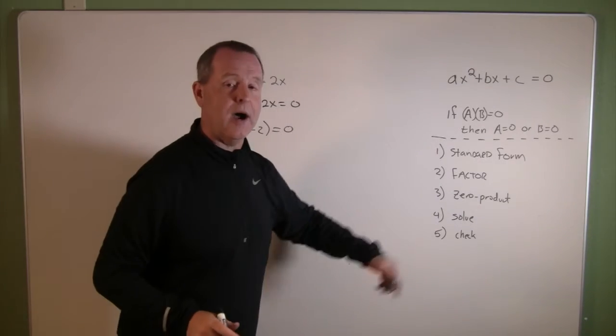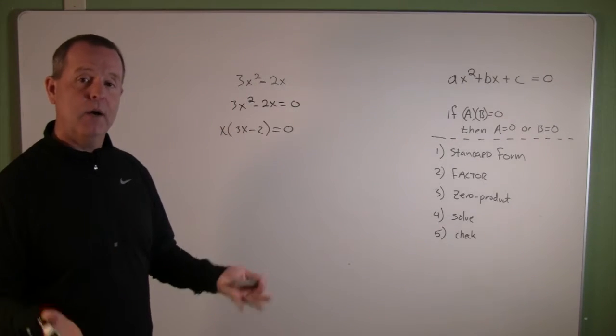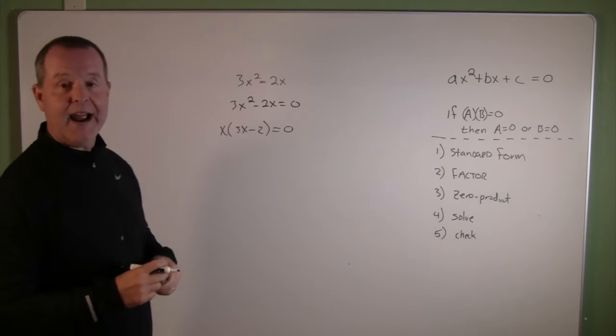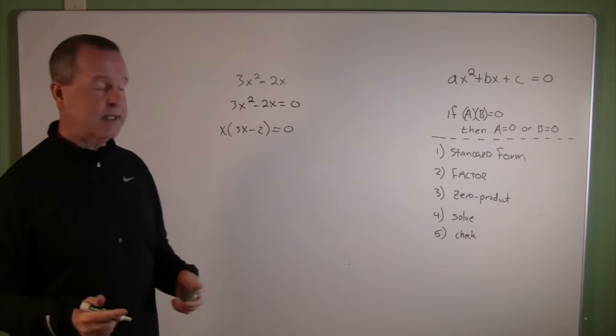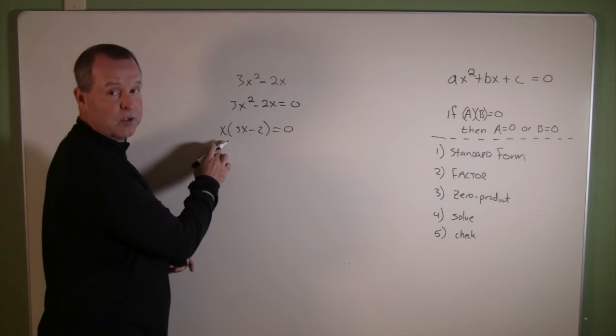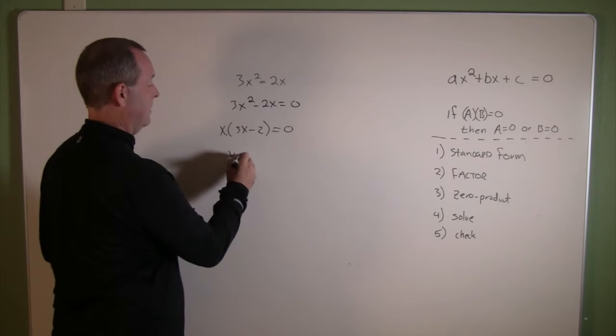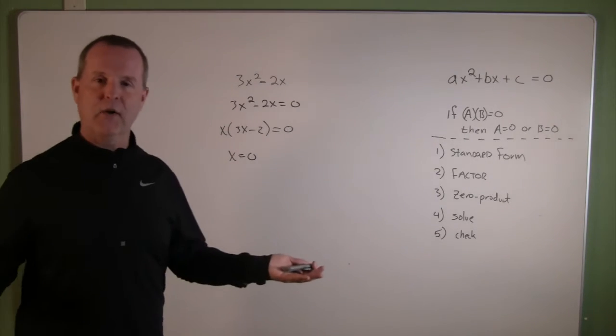So I apply my zero product principle, and from there, one of these two factors, for it to be true, must be zero. So I'll set the first factor equal to zero, x equals zero, already solved.